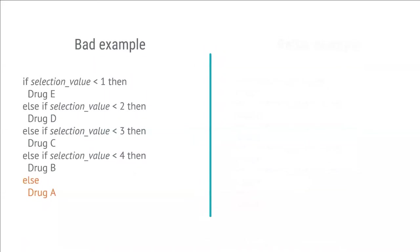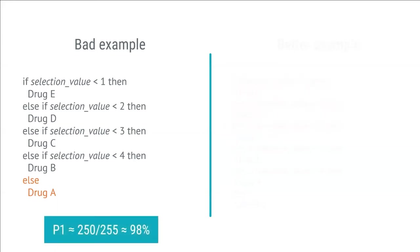In this example, drug A should be chosen if the selection value is less than five. Unfortunately, we have a lazy programmer who ends this function with a simple else statement. Assume the selection value is a byte variable and can take any value between zero and 255. In the event of a software failure with this design, the likelihood of ending up with drug A is roughly 250 divided by 255, because any value above five will result in drug A.